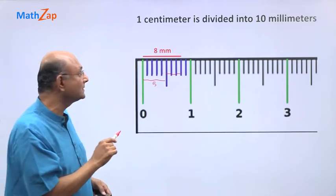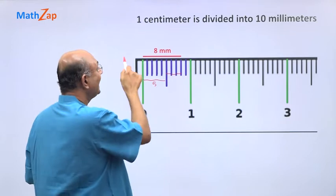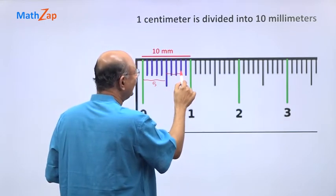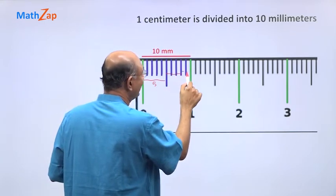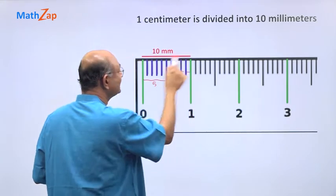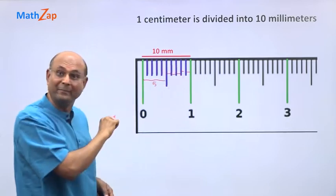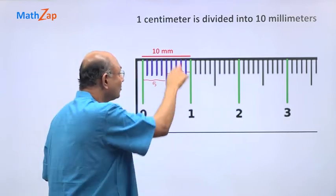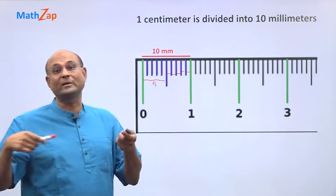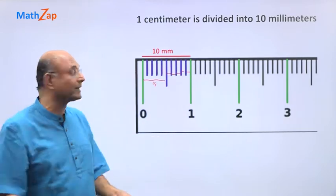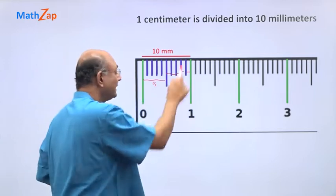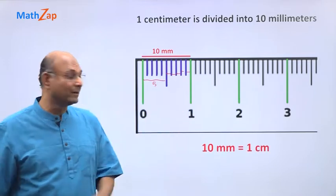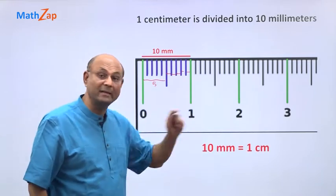Continuing from 8, we have 9 and then 10 — so this is 10 millimeters. But from 0 to 1 you already know it is 1 centimeter, so 10 millimeters is 1 centimeter.